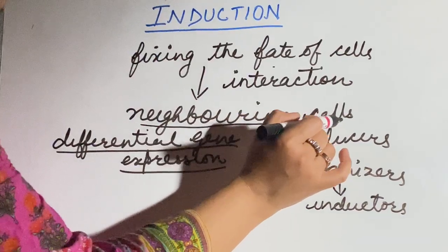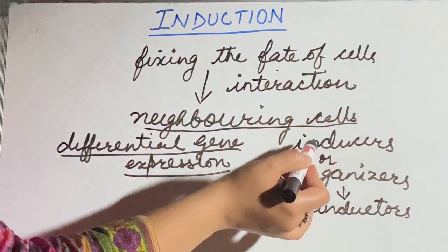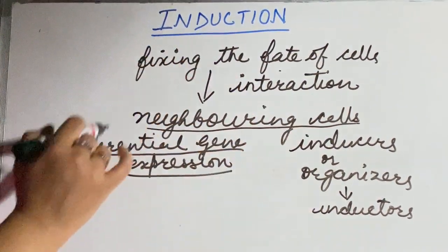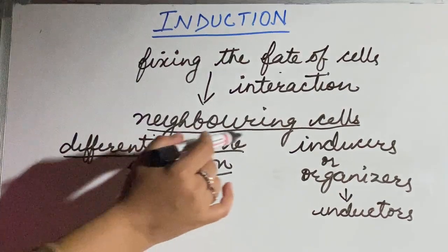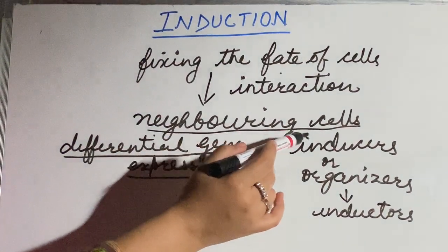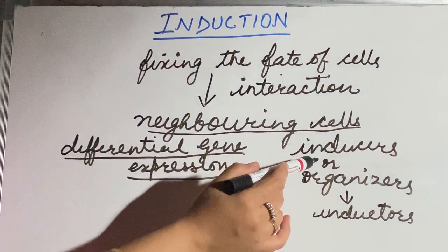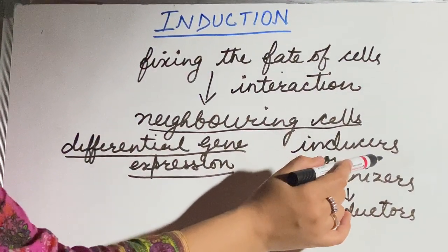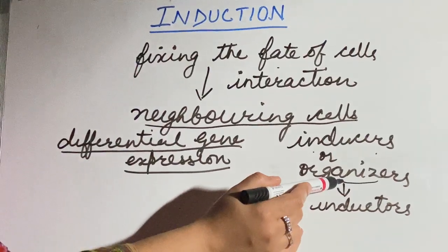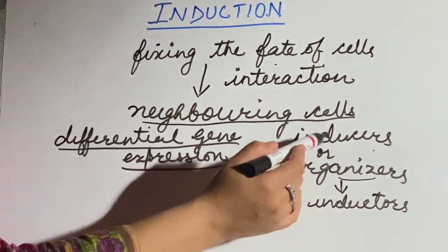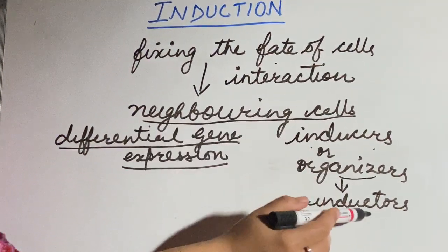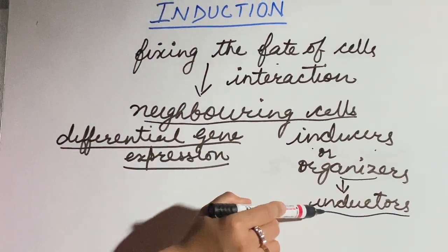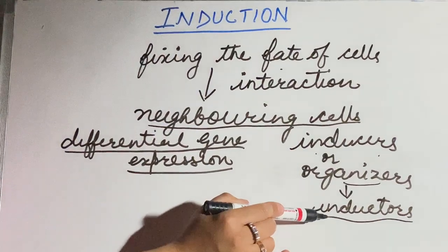So just as their neighboring cells are, that will determine their fate. And those neighboring cells which induce their development are known as inducers or organizers. How they induce them? By releasing some chemicals which are known as inductors.